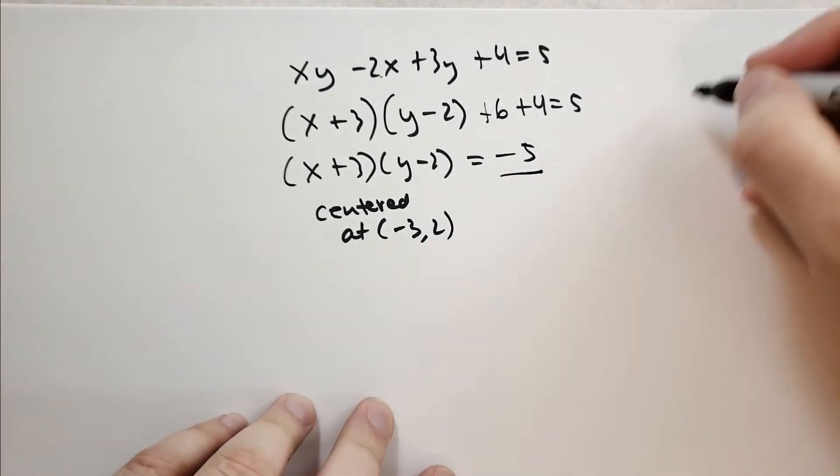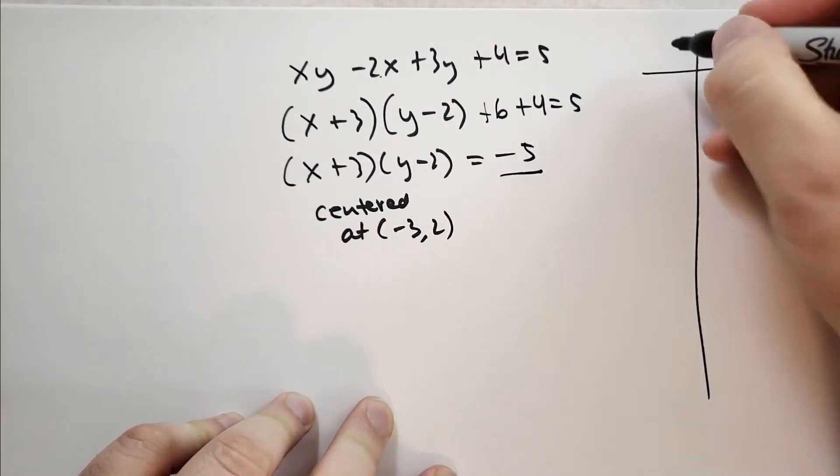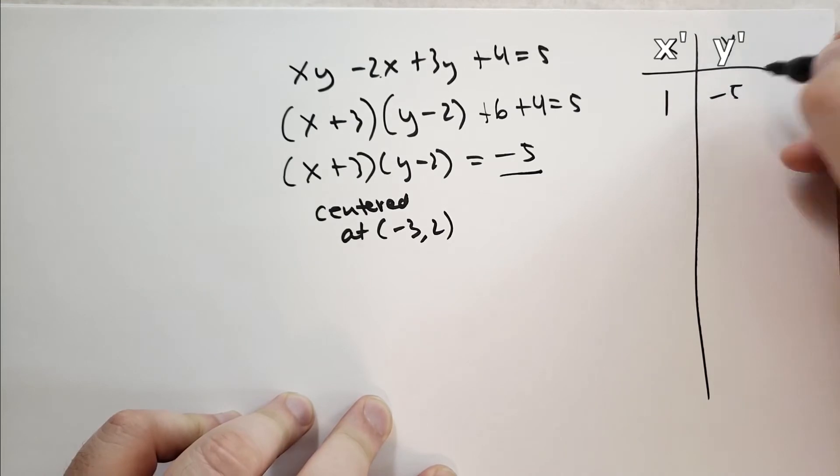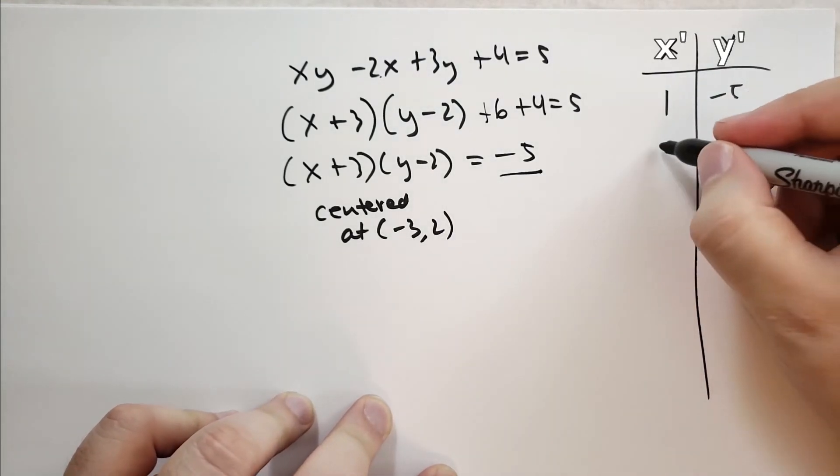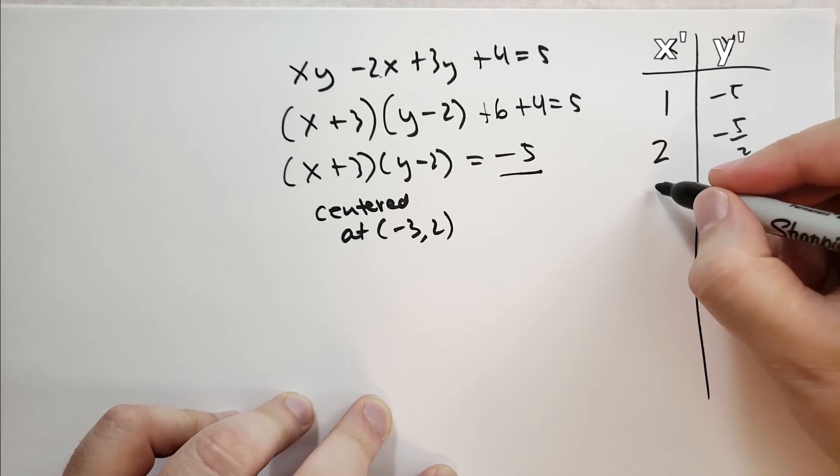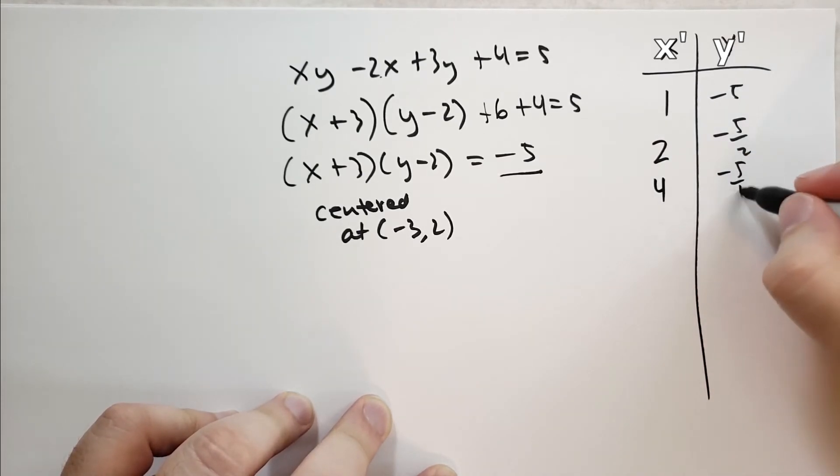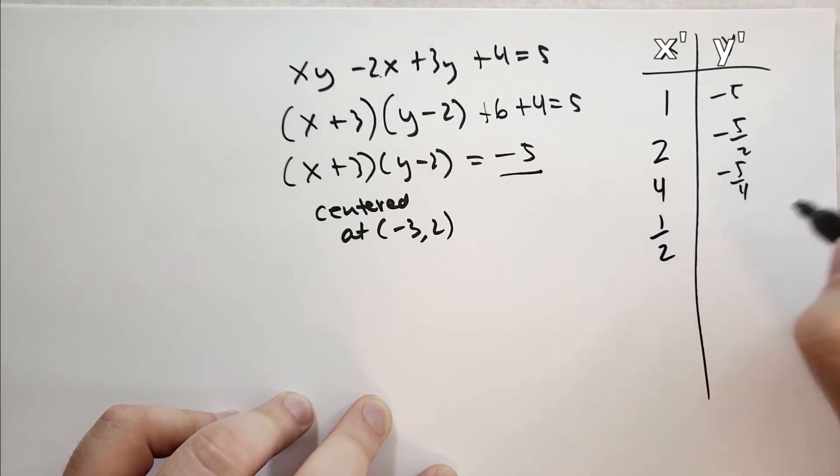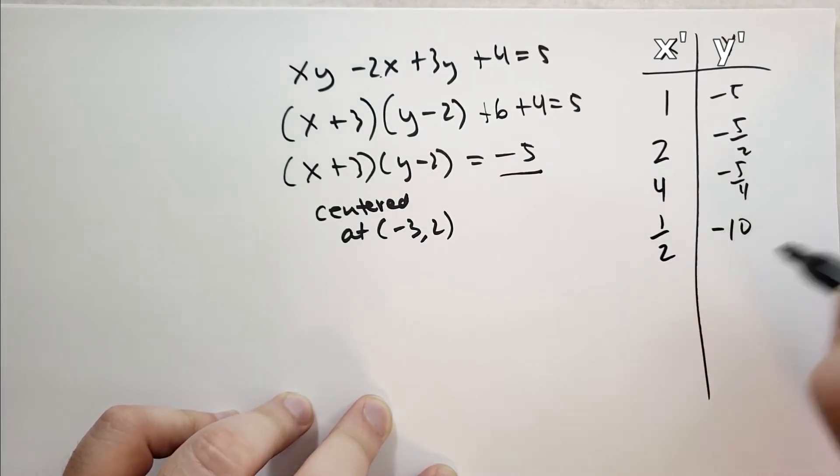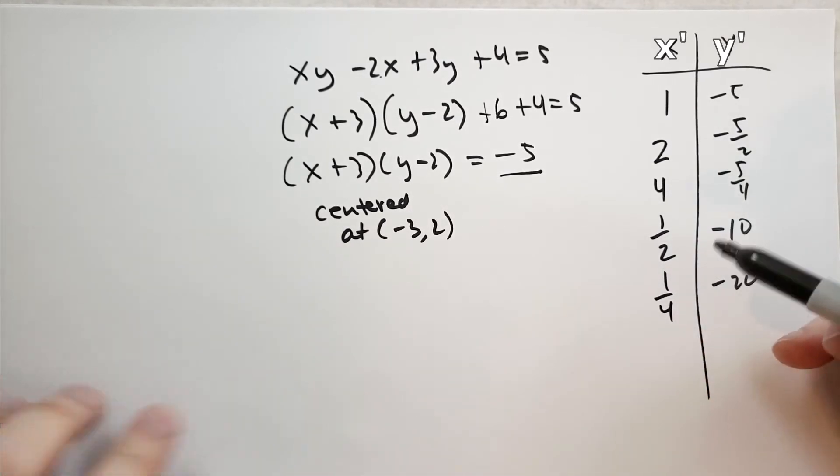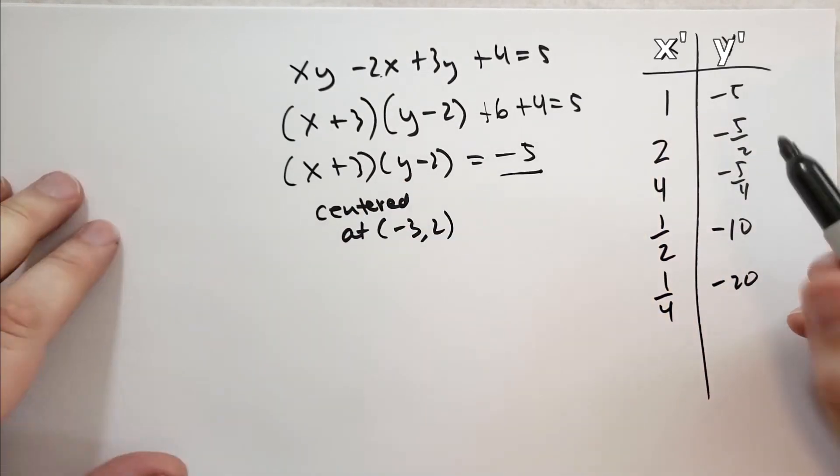So if x is 1, then y has to be minus 5. If x is 2, then y has to be minus 5 over 2. If x is 4, that's minus 5 over 4. And if x is 1 half, then y has to be minus 10. And if x is 1 quarter, then y has to be minus 20. And if x is negative, then y has to be positive.